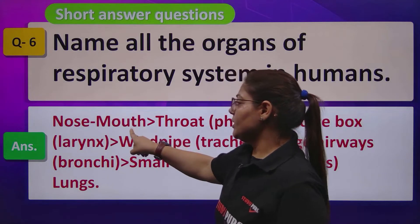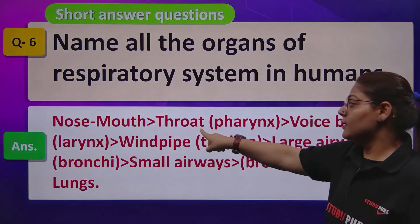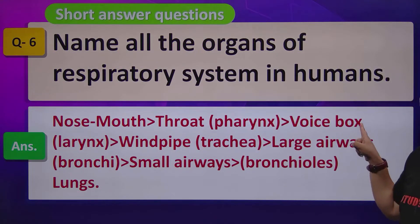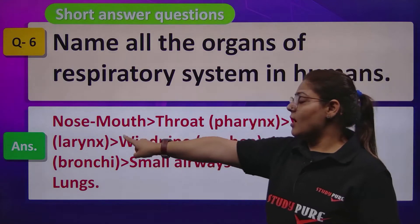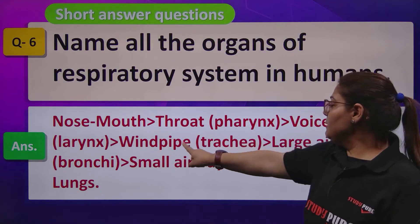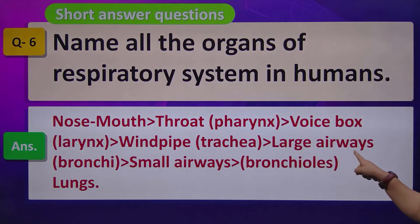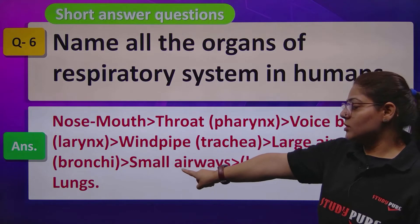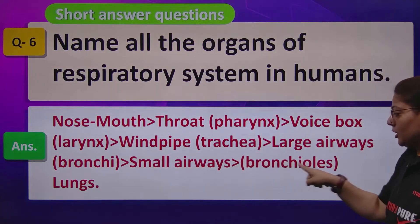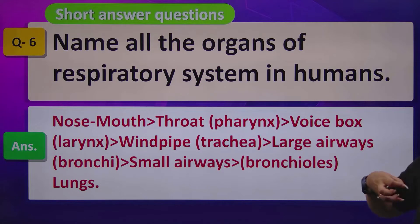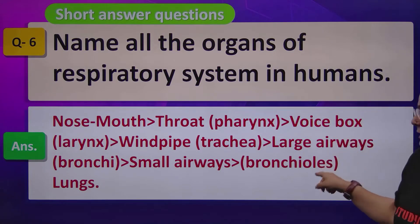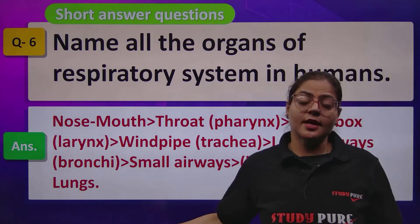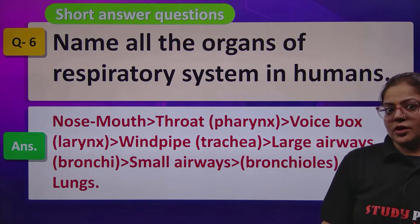Air enters through the nose or mouth, goes to the throat, then to the voice box which is called the larynx, and from there it enters the windpipe. After the windpipe, it moves to the large airways called bronchiae, then to the small airways called bronchioles, and finally it reaches the lungs, where the respiratory process is complete.